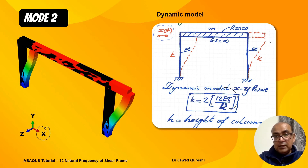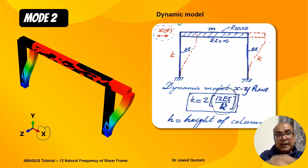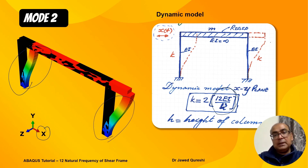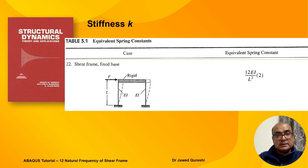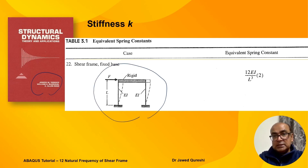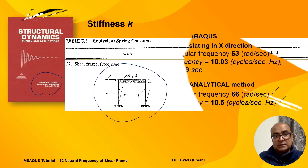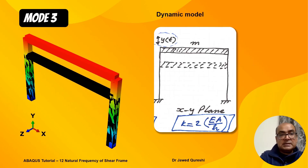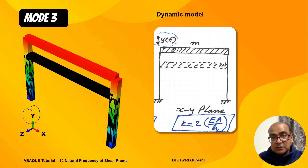In Mode 2, the frame translates in the X direction. Stiffness is defined by 12EI over H cubed. Because two columns participate, we multiply by two. This stiffness formula comes from the textbook Structural Dynamics by Tedesco. For a shear frame with a fixed base, the equivalent spring constant is 12EI over L cubed.